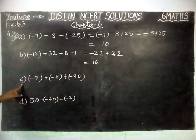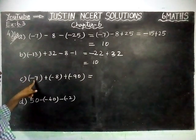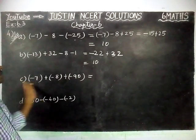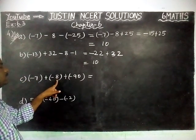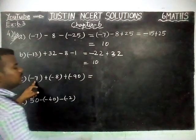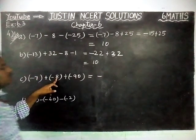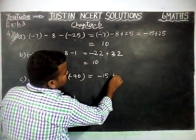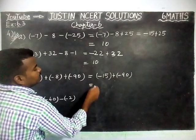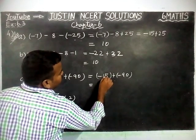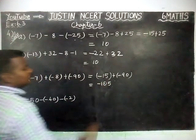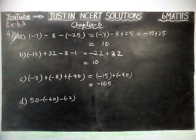Part C is equal to minus 7 minus 8 minus 90. All three numbers are negative. So we are going to add all three numbers: 7 plus 8 is equal to 15, and 15 plus 90 is equal to 105. Both have the same sign, so we add 90 plus 15 is equal to 105. Both are minus, so minus 105 is the correct answer.